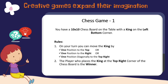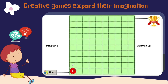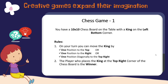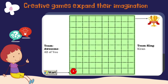You have a 10 by 10 chess board. There's a king at the left bottom corner — this is the starting position. The rules: it's a two-player game. On your turn, you can move the king by one position — to the top, to the right, or diagonally. The goal is: who gets the king to the top-right corner first? That person is the winner. Very simple. Who wants to go first?